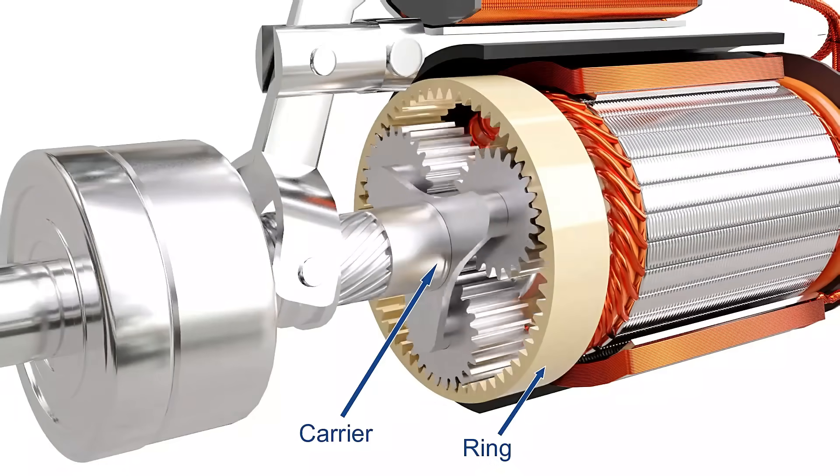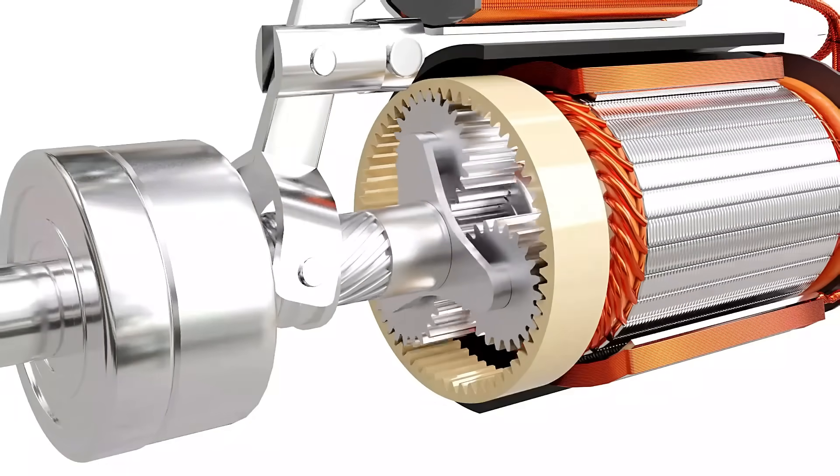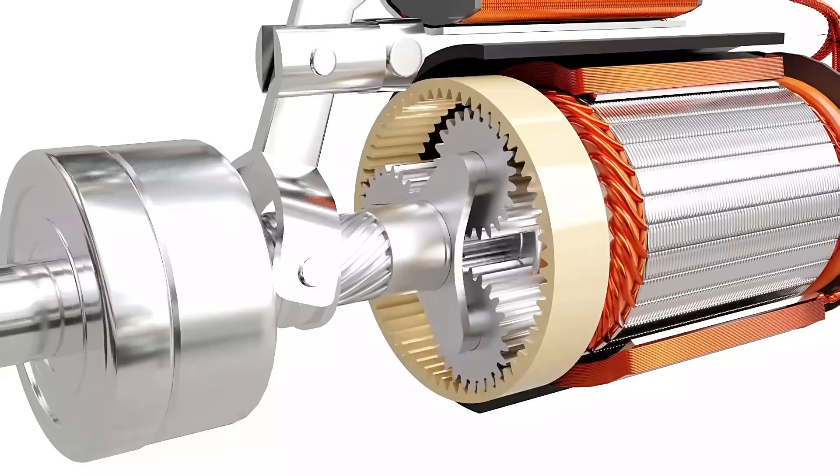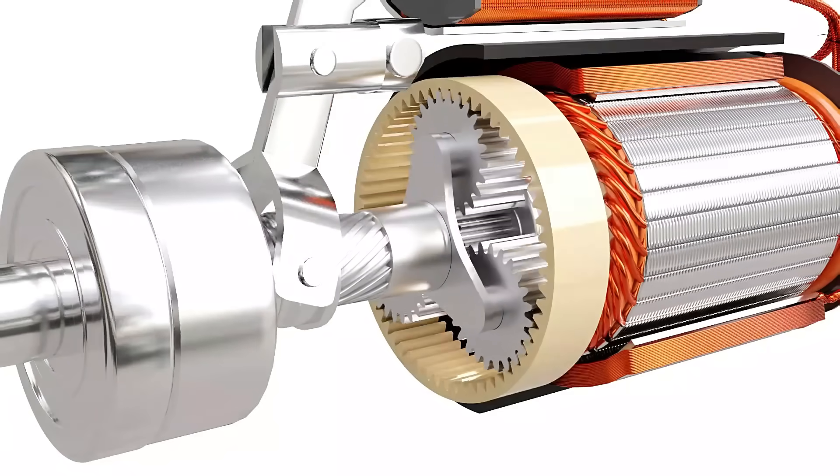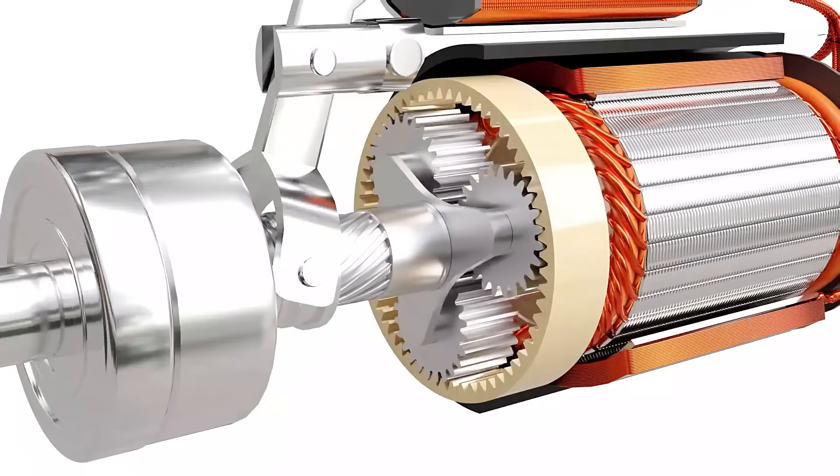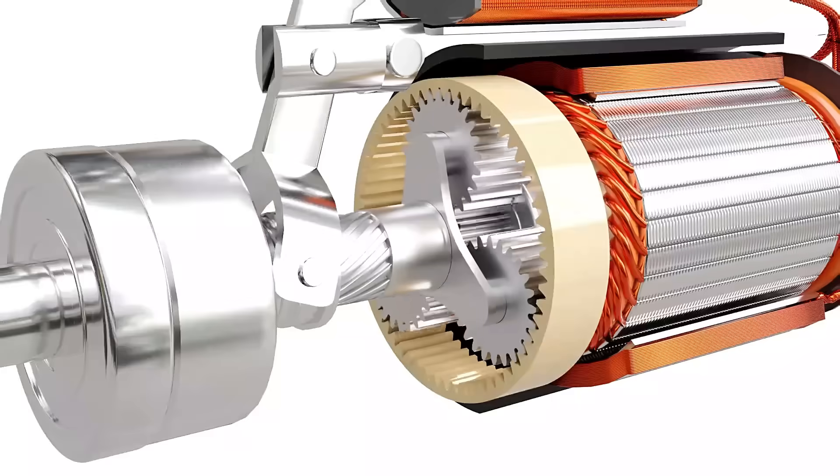In starters, the ring gear is fixed, the sun gear is the input, and the planet carrier is the output. For the setup shown here, the gear ratio is 7 to 1. The combined gear reduction results in enough torque to spin the engine.